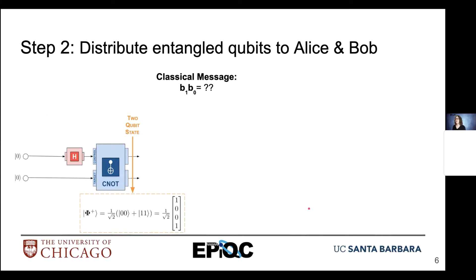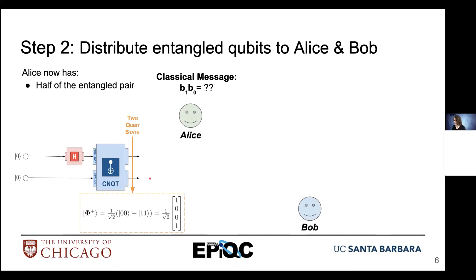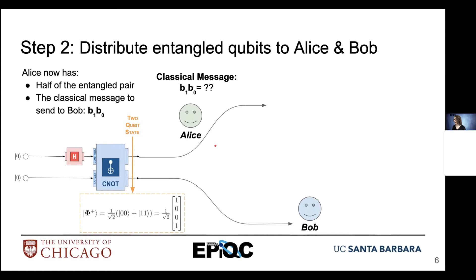Step two: we distribute those entangled qubits to Alice and Bob. We take half of the two-qubit state and give it to Alice and the other half to Bob. So now Alice has two things in her possession: her half of the entangled pair and also a classical message she wishes to send to Bob — we'll call that B1, B0, the two bits she wants to transmit.